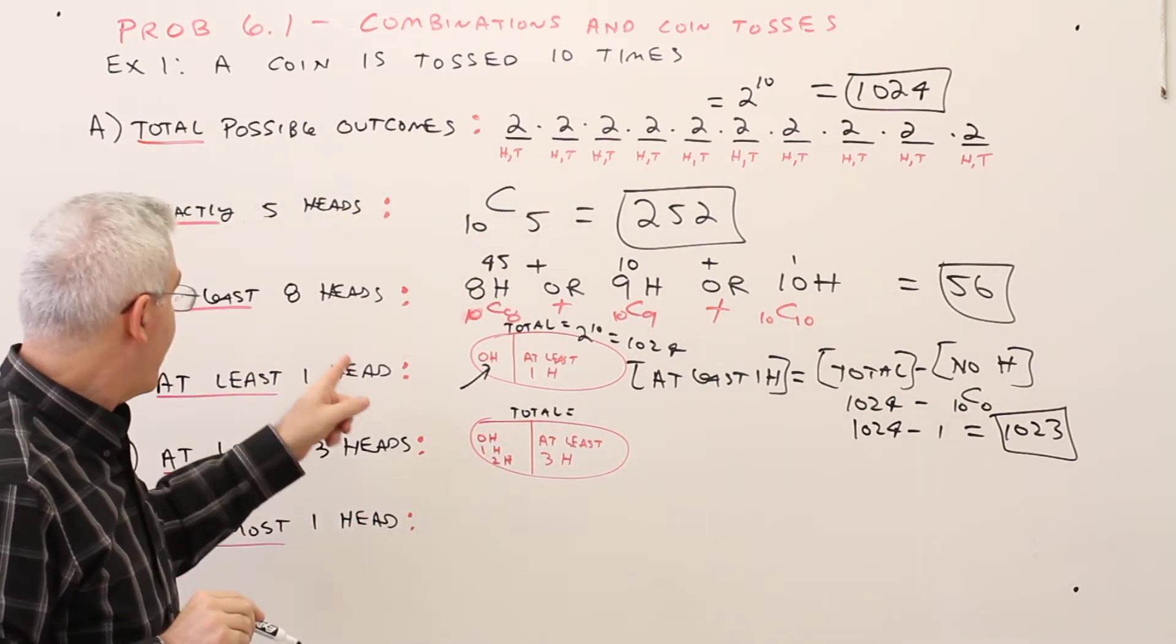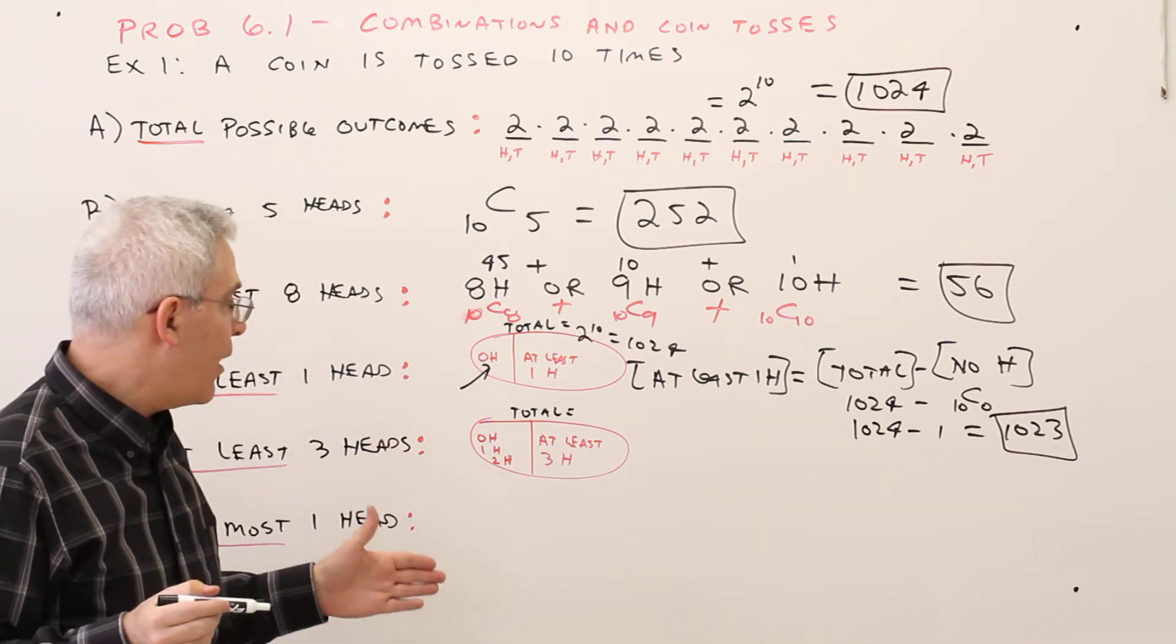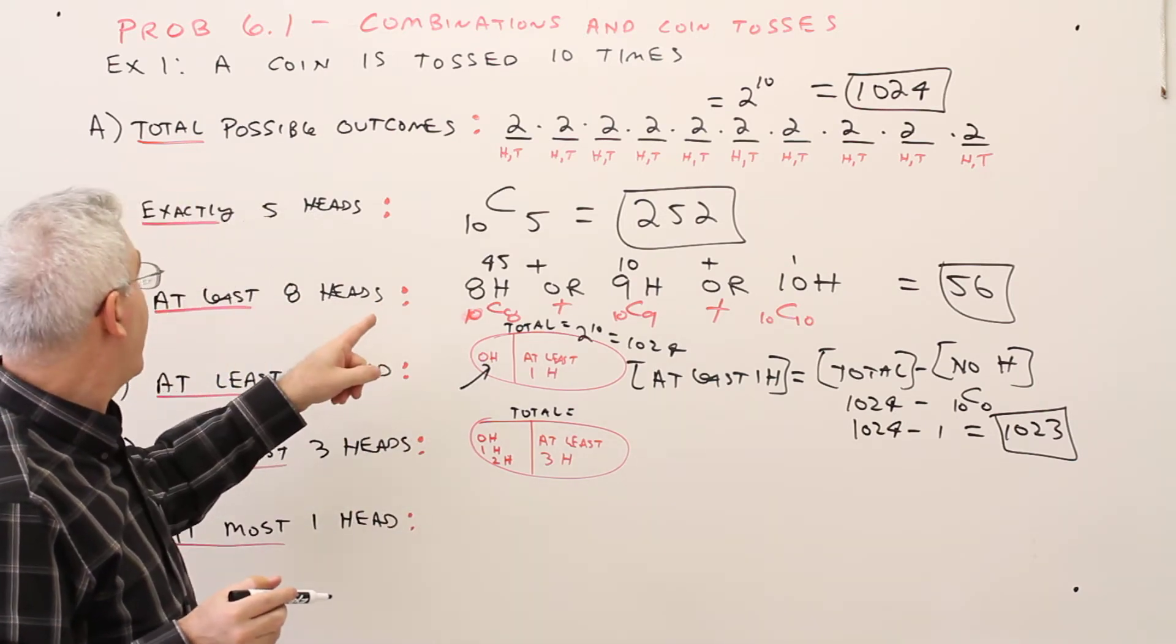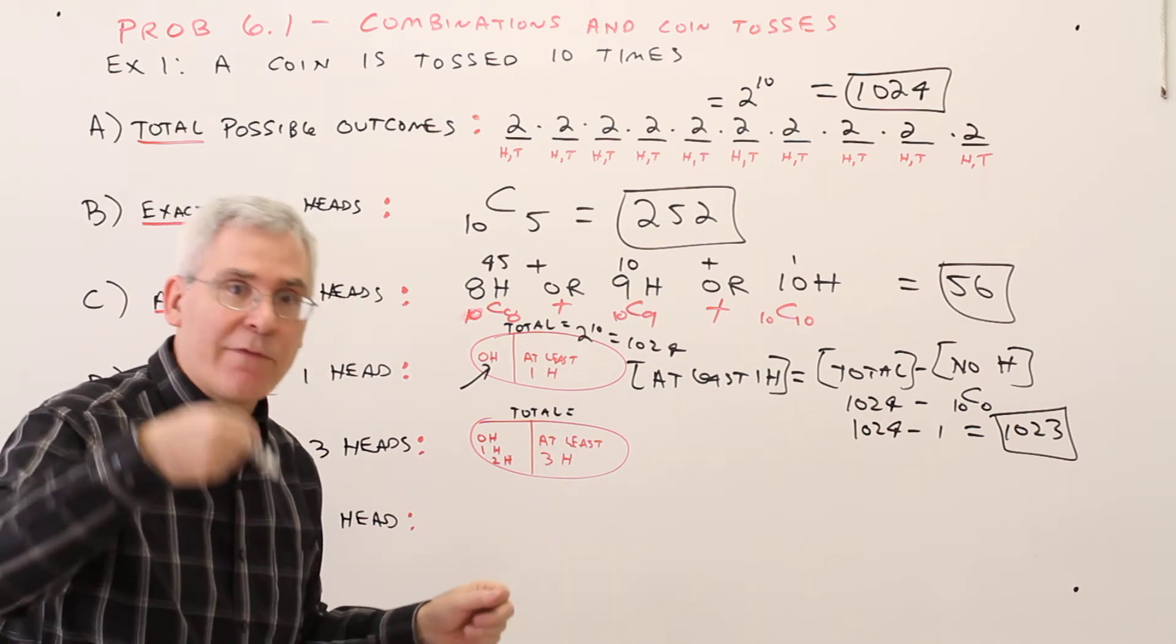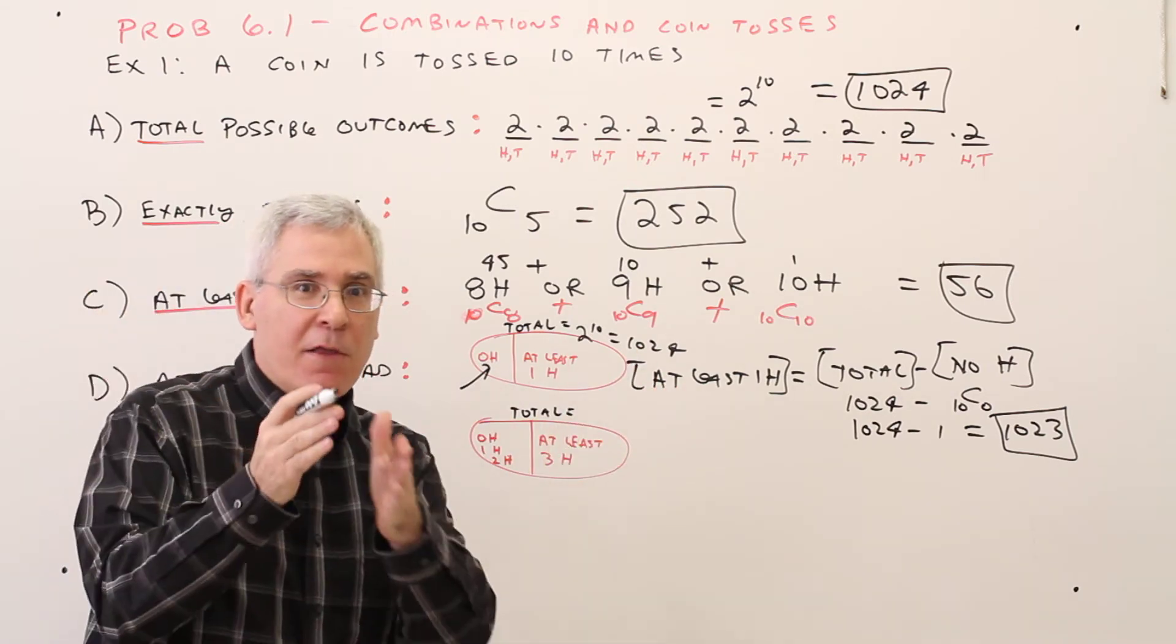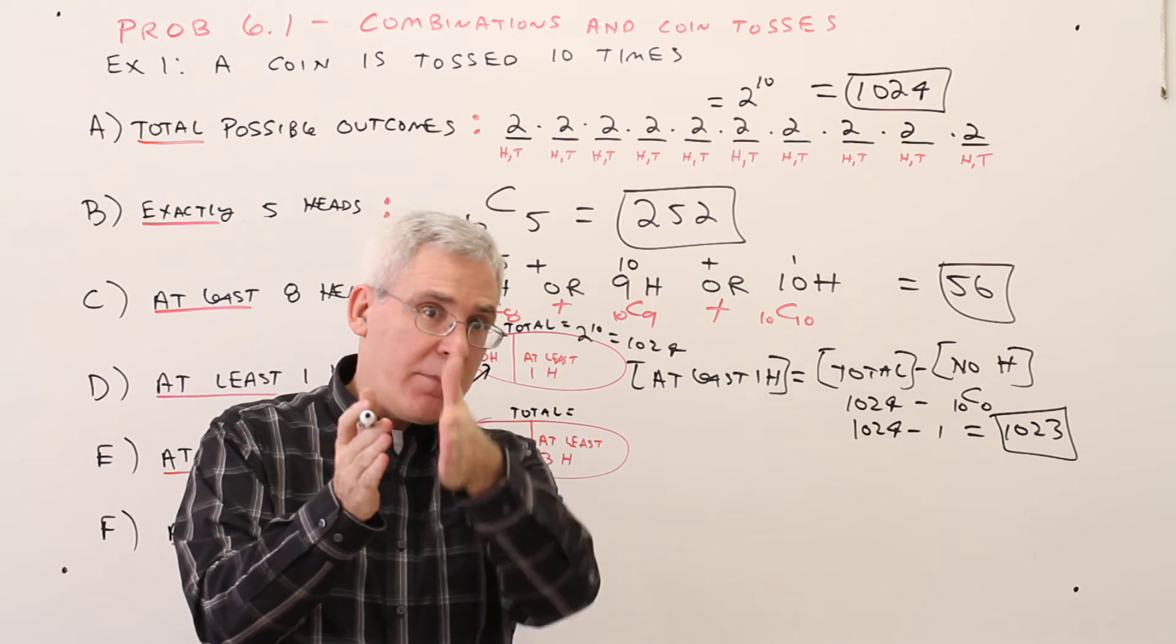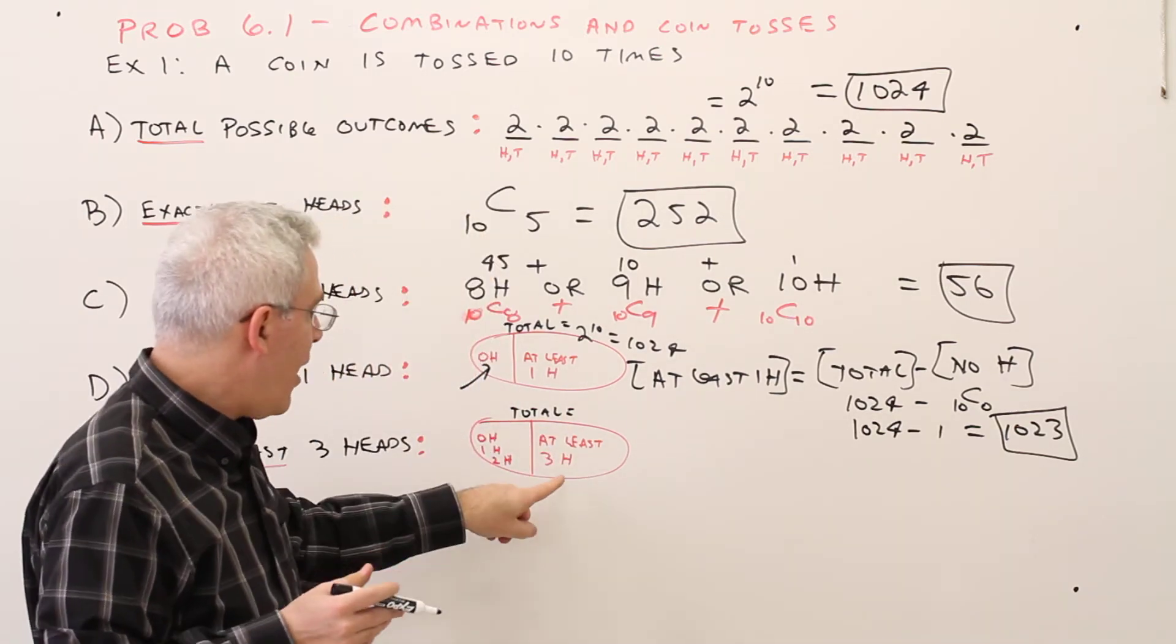Part E, kind of similar to this, except now we've got at least 3 heads. So for at least 3 heads I could add up, like I did over here, 3 or 4 or 5 or 6 or 7 or 8 or 9 or 10. I could have done that over here, 1 or 2, but that list is a little bit longer. So depending on which side of the midpoint I'm on, like about 5 heads, I decide to use this technique or not.